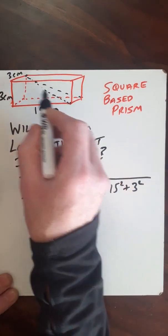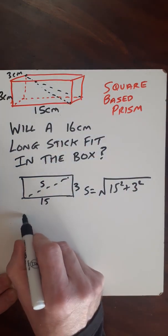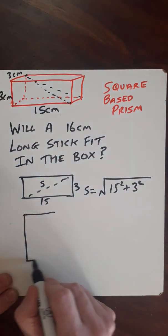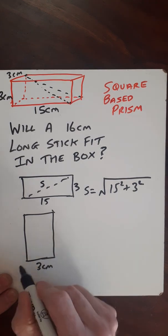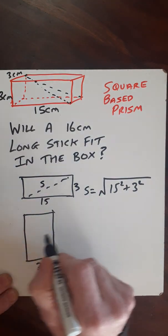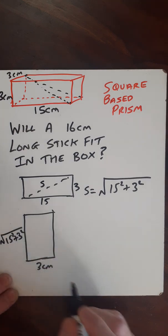Now that's the back length, but now I want to find this bit here inside the middle part. So then if I bring that out like this, I'll have a base of 3cm and the side length will be this - the square root of 15 squared plus 3 squared.